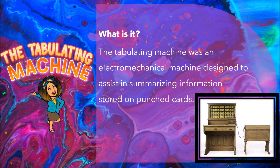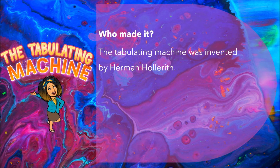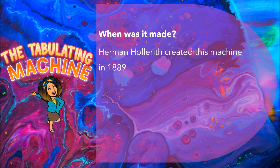Next, let's look at the Tabulating Machine — an electromechanical machine designed to assist in summarizing information stored on punched cards. If you take the literal definition of a computer, you could say the Tabulating Machine was being a computer: it was an electronic device that facilitated input, processing, output, and storage. It was created in a competition offered to build machines that could help with the U.S. Census that happened every 10 years. The Tabulating Machine, sometimes called the Census Machine, was created by Herman Hollerith in 1889 and completely revolutionized machines and engines of that time.